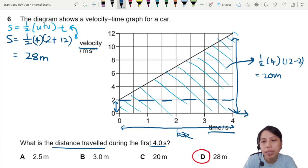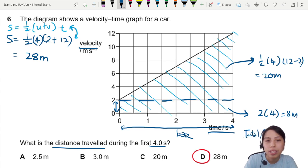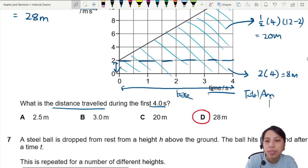And the area of this side, the small rectangle down there, will just be 2 times 4, 8 meters. Then you add area. Total area will just then be 8 plus 20, which is 28.